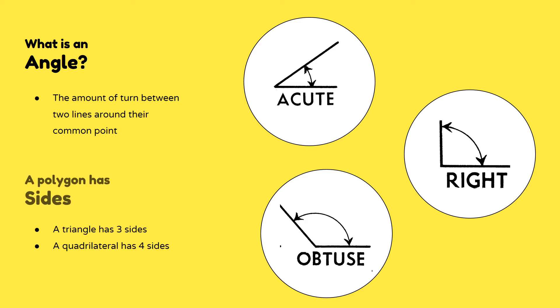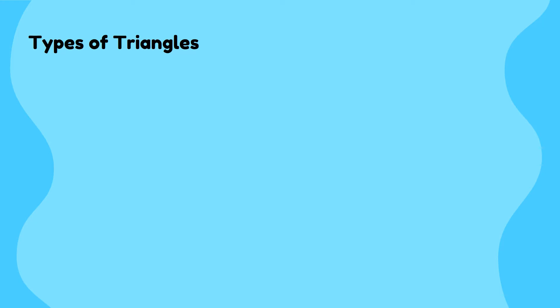Third, we can describe a geometric figure using its sides. By now, you would know that a polygon with three sides is a triangle and a polygon with four sides is a quadrilateral. Since we have covered the three properties, let us start to use them to describe triangles. There are two different ways that we can classify triangles: by their sides and by their angles. Let us first start with their sides.